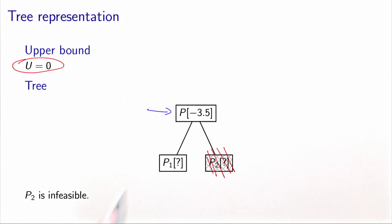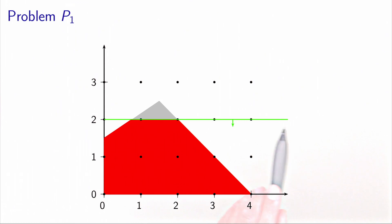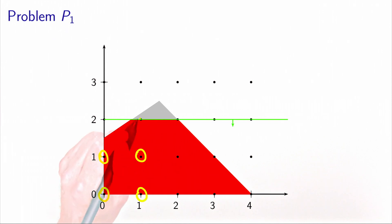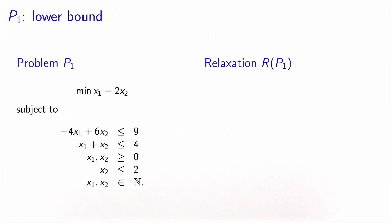Now we need to try to solve P1. Because P2 is infeasible, the solution of P1 will also be the solution of the original problem. This is the feasible set of problem P1 with the additional constraint that x2 must be less or equal to 2. The feasible set contains the same 11 solutions, but the polyhedron of the relaxation is different — we have cut one portion of it, and this is how the algorithm makes progress.